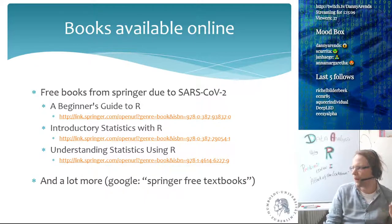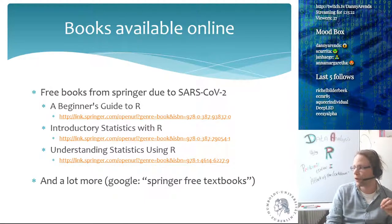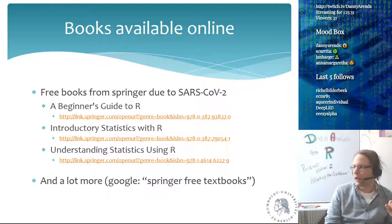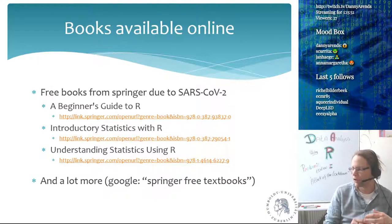If you want to jump directly into the statistical part, which we'll cover around lecture six, then Introductory Statistics with R is really good. Understanding Statistics Using R is great when you don't have a background in statistics. The second book is more for when you already know what an ANOVA is and just want to know how to do it in R. If you don't know what an ANOVA is and want to learn using R — things like ANOVA or t-tests — then the third book is really good.